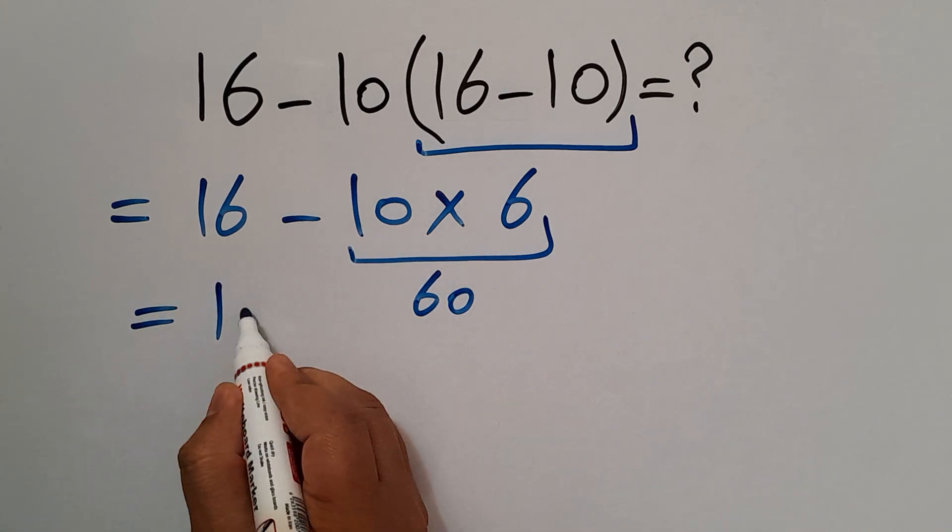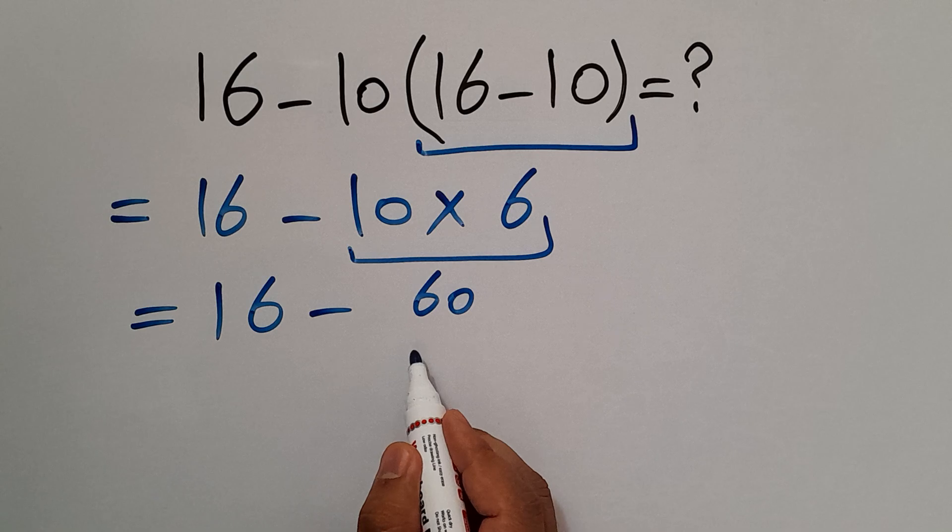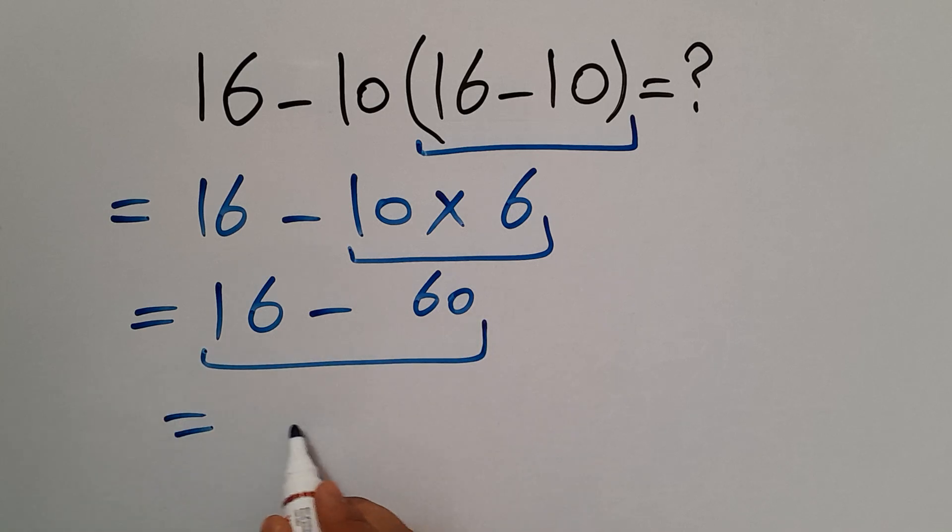So we have 16 minus 60 which equals negative 44. So our final answer to this problem is negative 44.